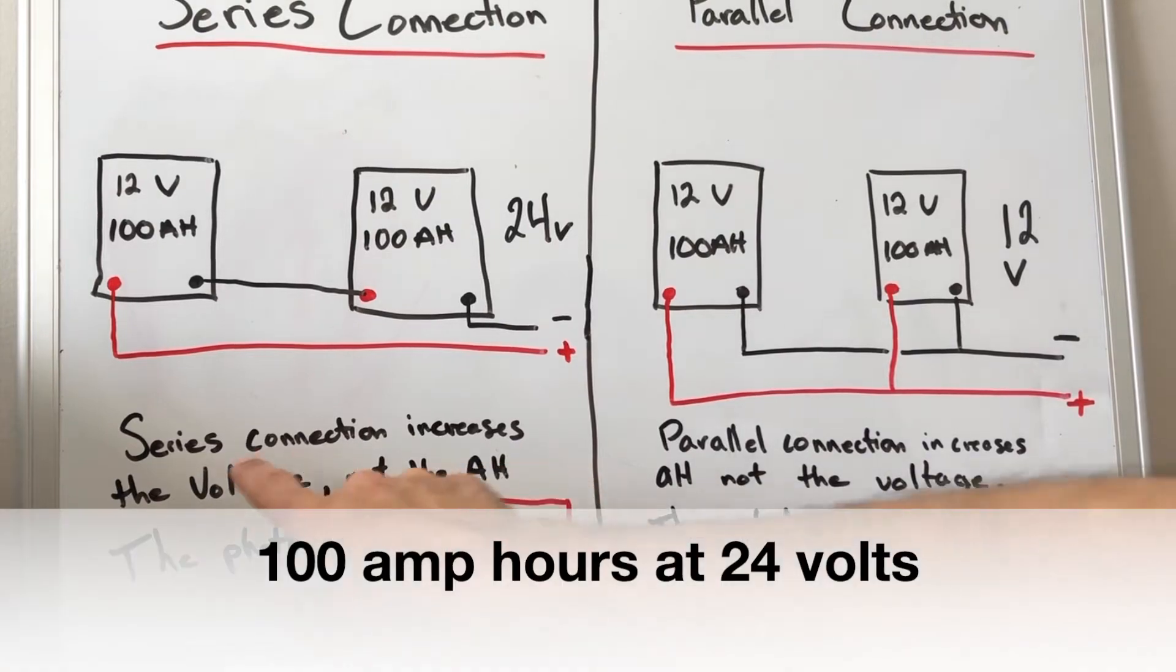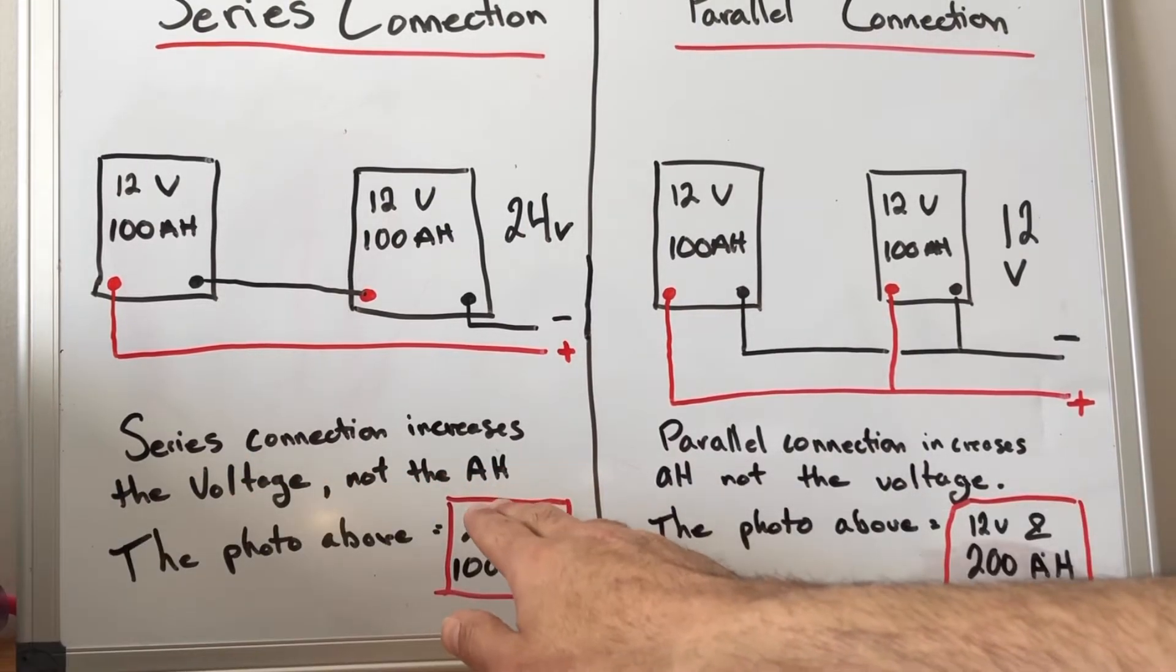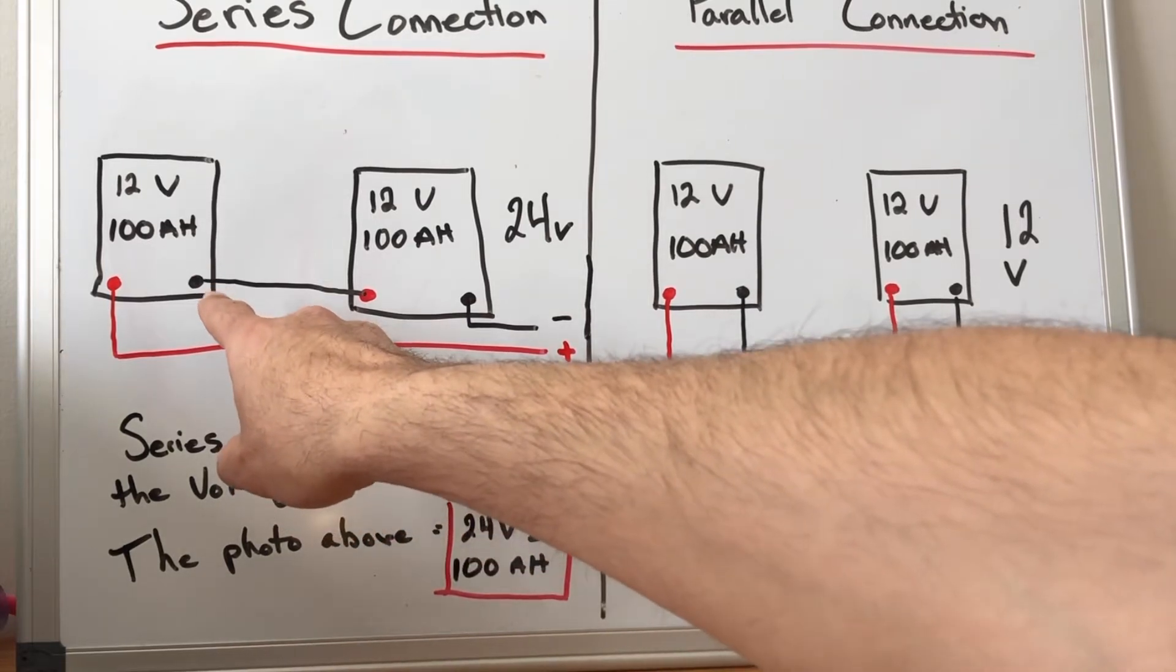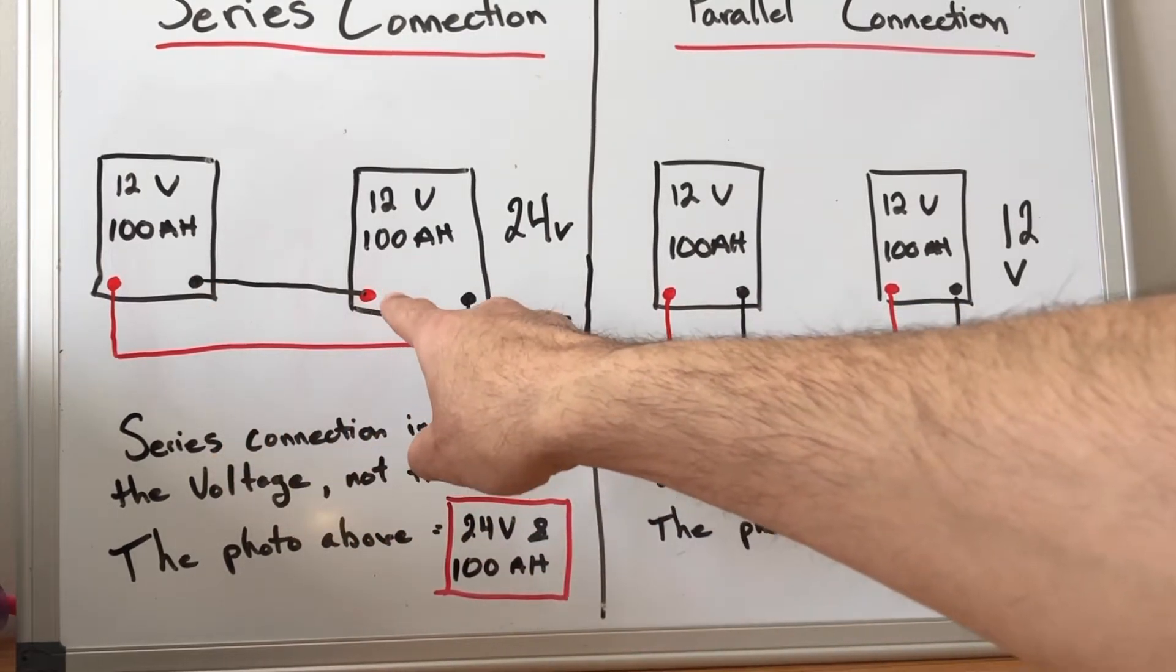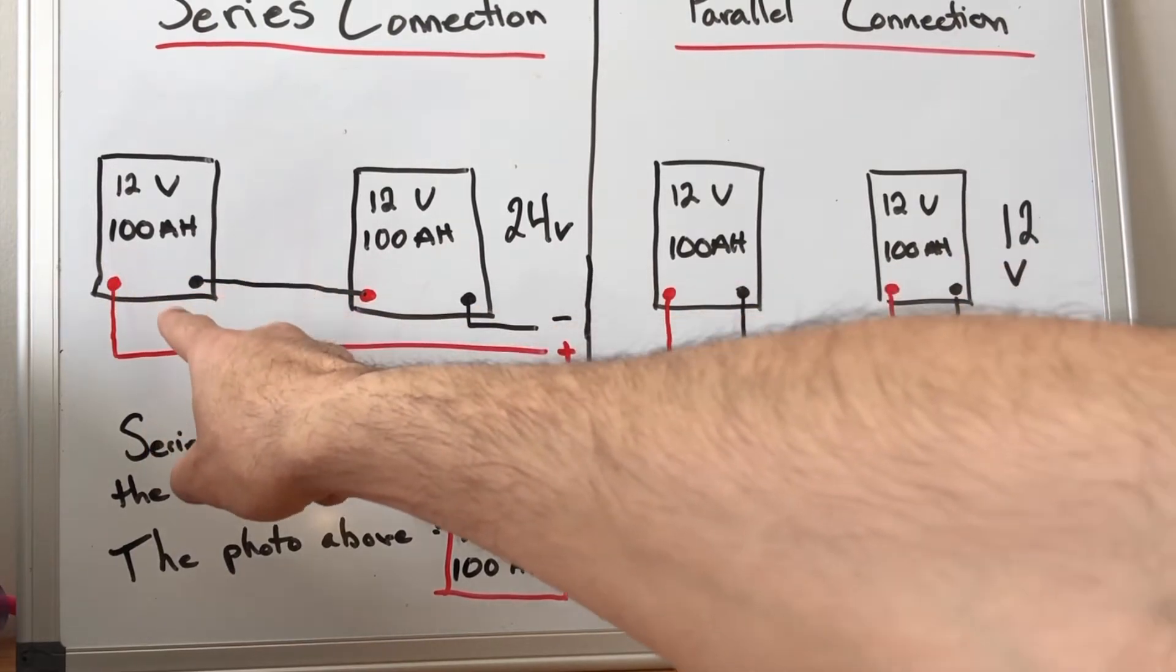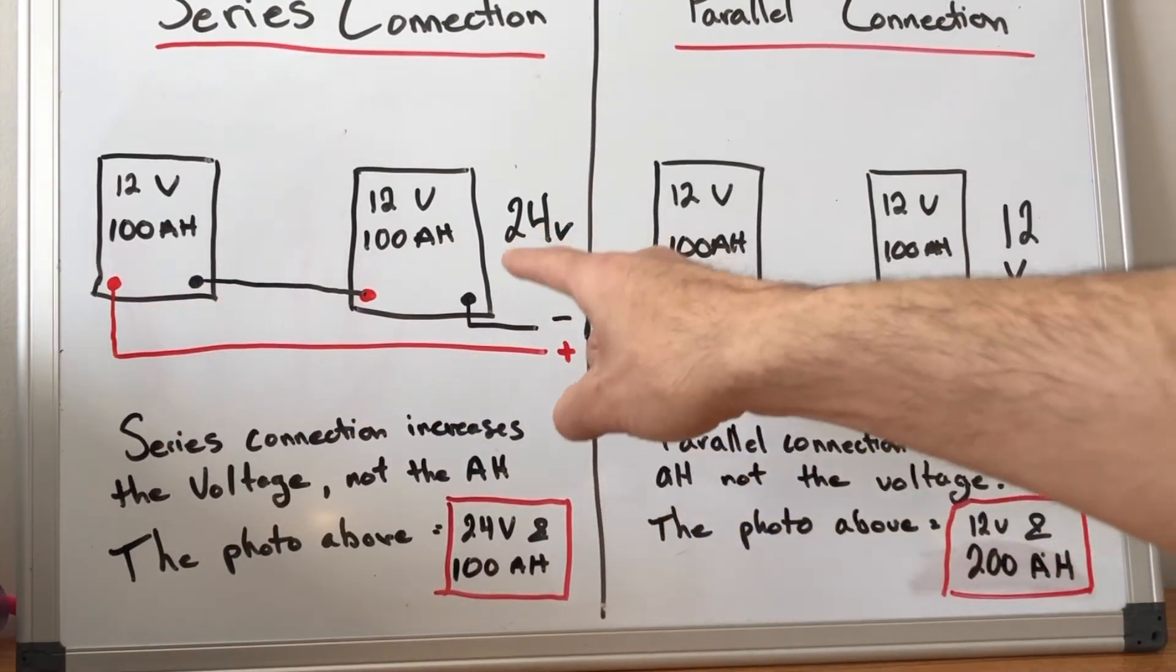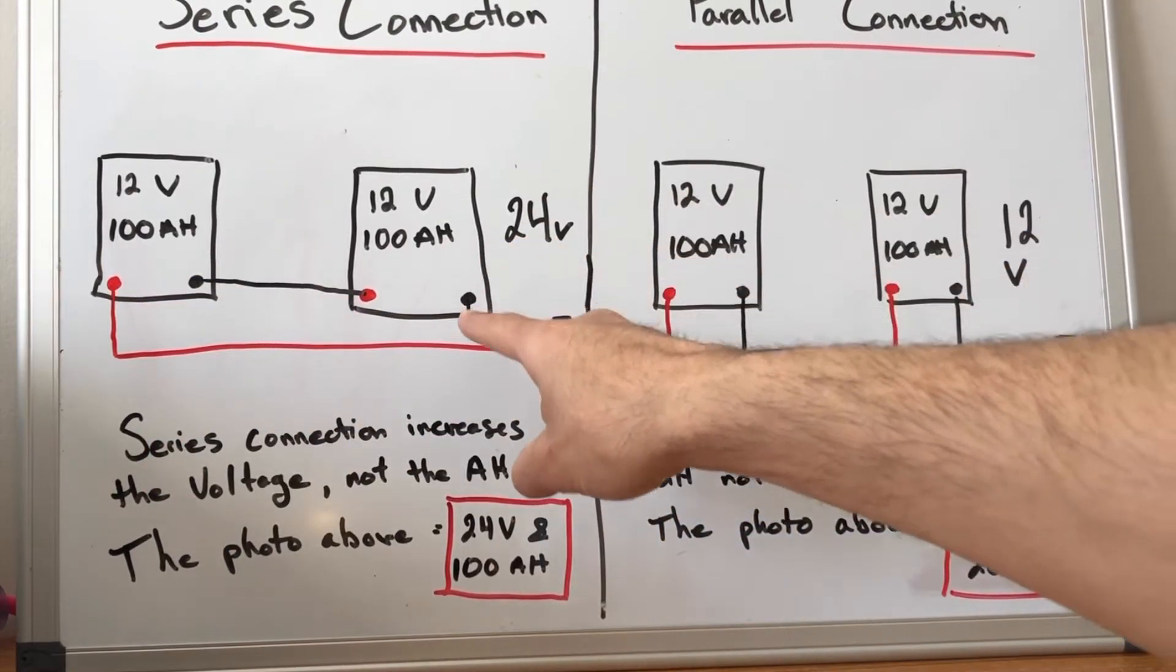So we can see here with a series connection this increases the voltage but not the amp hours. So we would go from the first battery from your negative to the other battery's positive and then you run a lead out from the first battery's positive and a lead out from the second battery's negative.